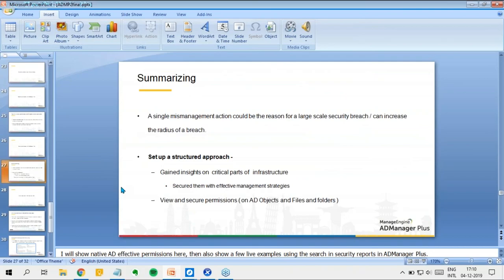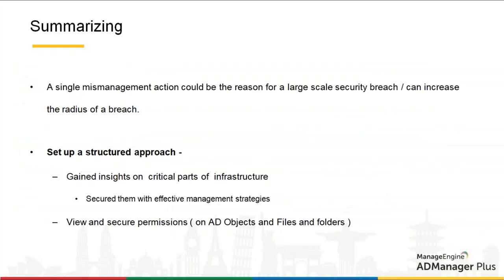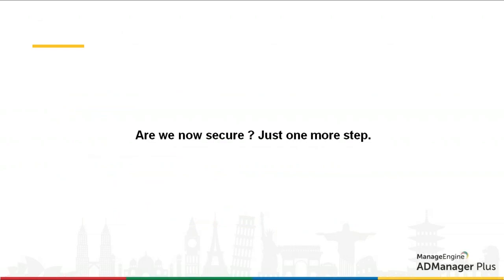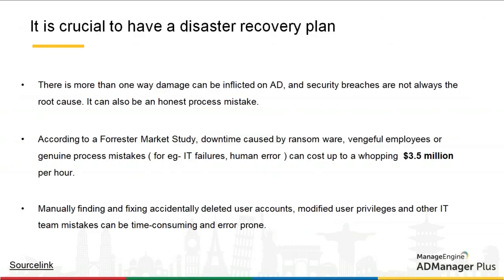A quick summary: a single mismanagement action could be the reason for a large-scale security breach, or act as a catalyst increasing the radius of the breach. To overcome this, we set up a structured approach — first gaining insights on all critical parts of our infrastructure and fixing them with effective management strategies, then securing permissions using reports and the management app. It's also crucial to have a backup and restore point as a safety net in the event of a security breach or data failure.